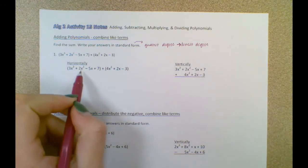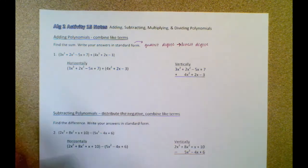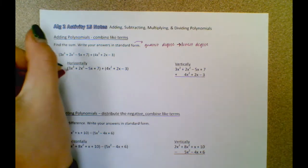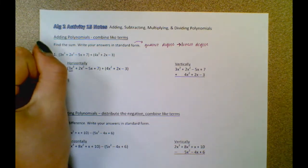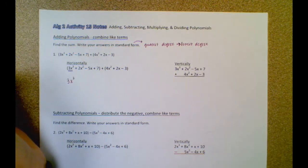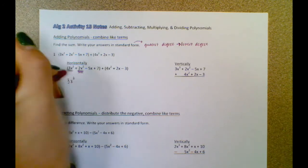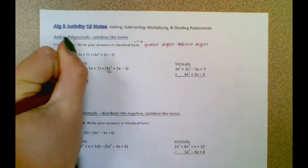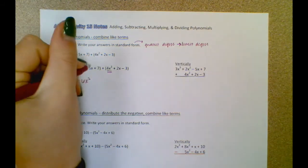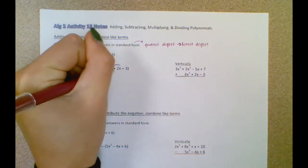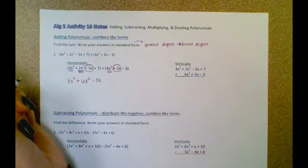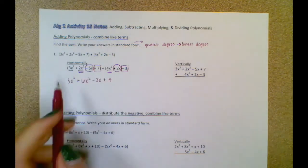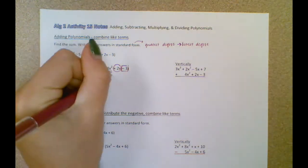There are two different methods to do this — you can add horizontally or vertically. For number one I want to show you both ways. First I'm going to find all my like terms. This is the only x to the third term, so it's going to be by itself. I like to order the degrees so I don't have to rewrite in standard form later. My x squared terms: positive 2x squared and positive 4x squared, so 2 plus 4 is 6x squared. My x to the first terms: negative 5x and positive 2x gives me negative 3x. And 7 minus 3 is 4. I have the greatest degree at the top and the lowest at the bottom, so I am in standard form.